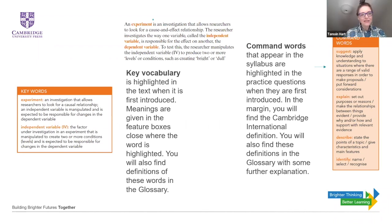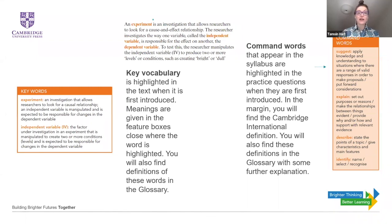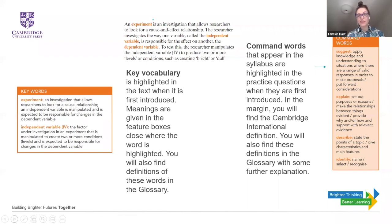Key vocabulary that you'll see is highlighted in the text when it's first introduced. Meanings are given in the feature boxes close to where the word is highlighted. You'll also find definitions of these words in the glossary. And over to the right here, you'll see command words - they appear in the syllabus highlighted in practice questions where they're first introduced. In the margin you'll find the Cambridge International definition, and you'll also find these definitions in the glossary with some further explanation.